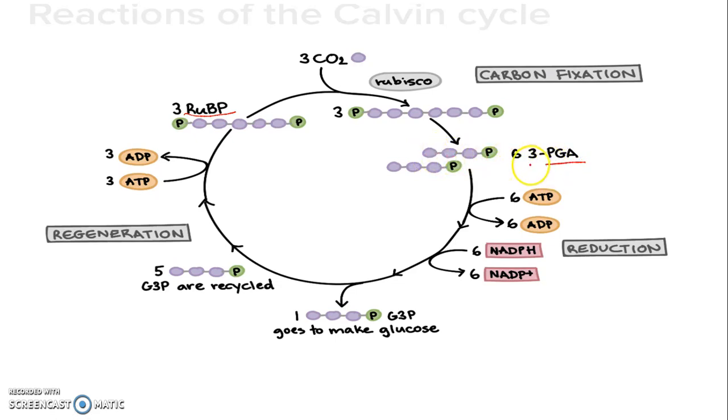This PGA gets converted into G3P in the presence of energy from ATP and NADPH. These ATP and NADPH were made in the light-dependent reactions.